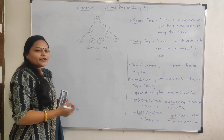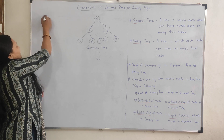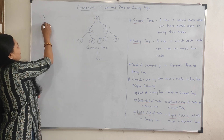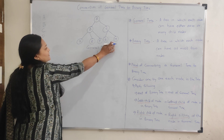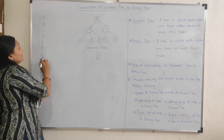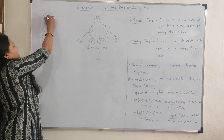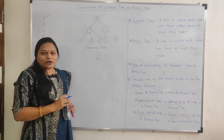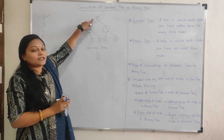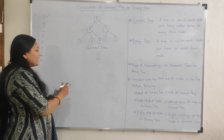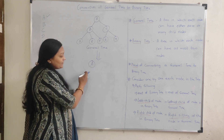We need to convert this general tree into a binary tree. The nodes are at the first level: A; second level: B and C; third level: D, E, F and G, H. We consider each node one by one and apply the rules. First consider A — it is the root node in the general tree, so it remains the root node in the binary tree.